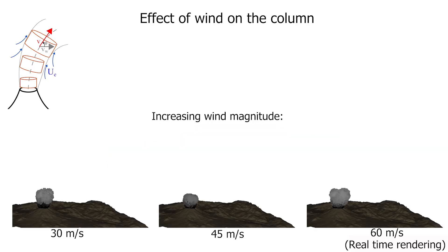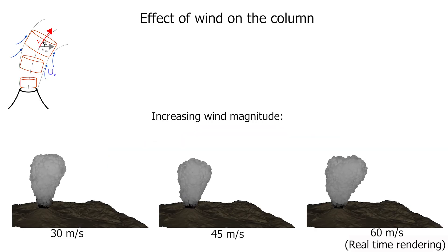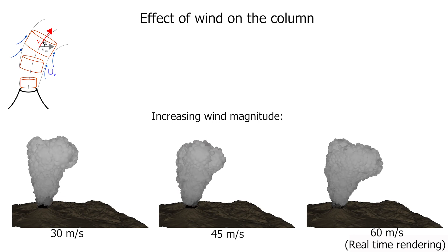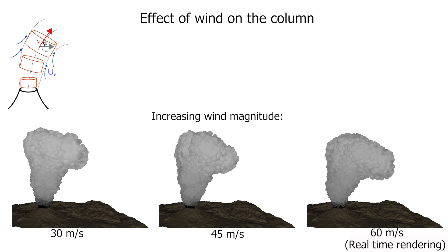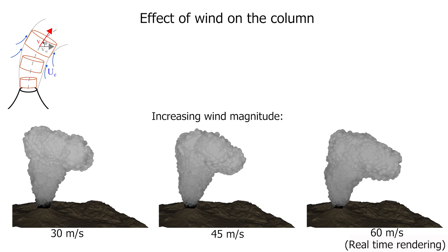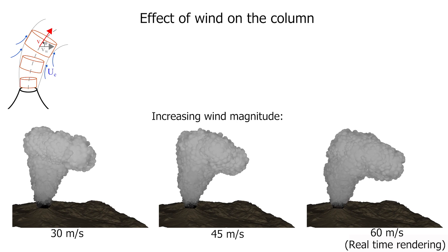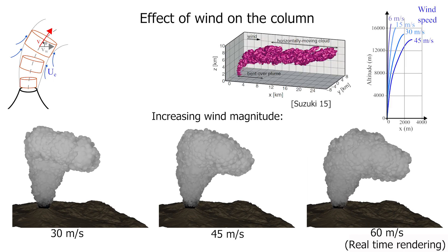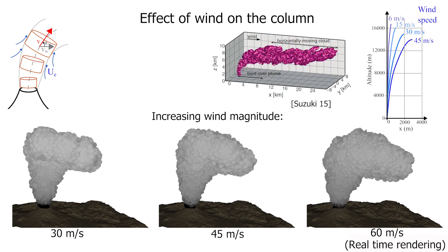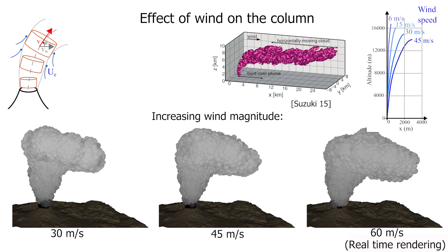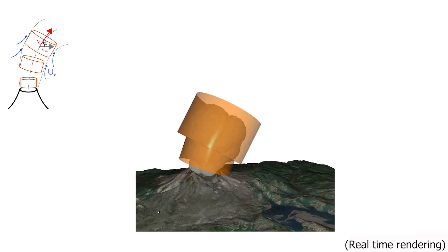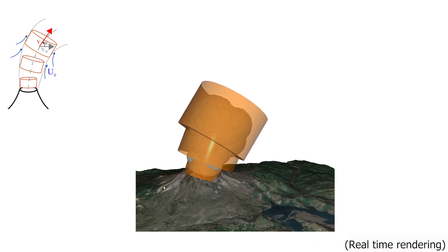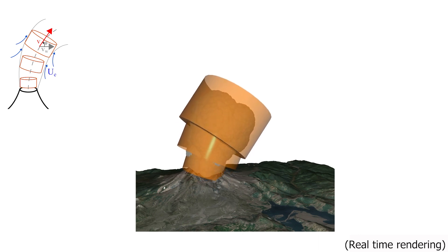Our layered model also handles the effect of wind on the column, where force is applied on the effective section of the layer. This results in a curved trajectory of the slice centerline that we can compare to expected curves from specialized literature. The slice geometry is also aligned to its trajectory.